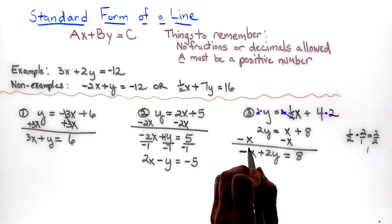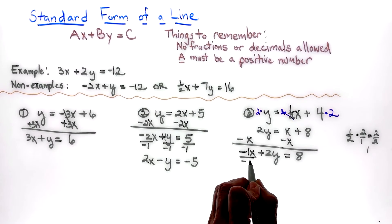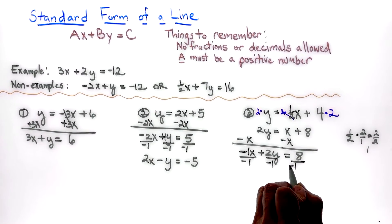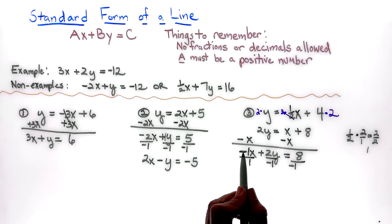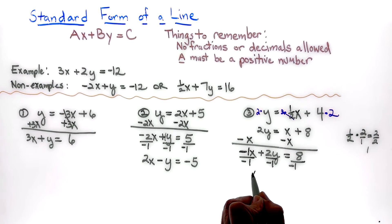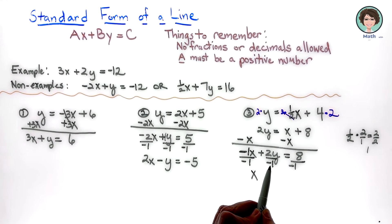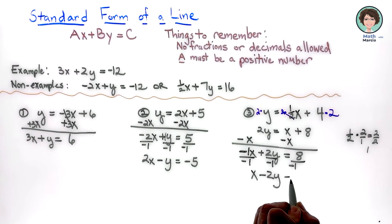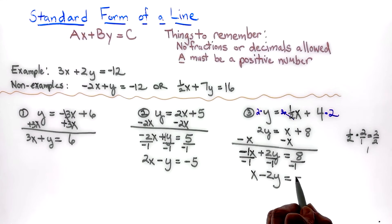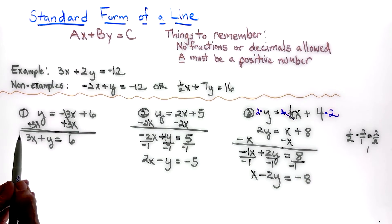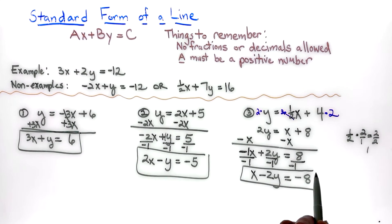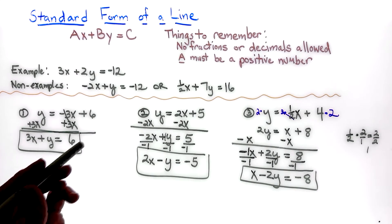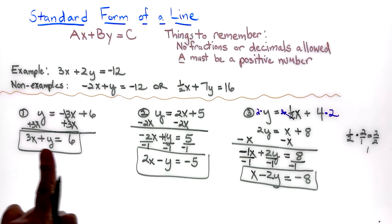That's like a negative 1, so I divide everything by negative 1 because A must be positive. Negative 1 divided by negative 1 is positive 1, so I just write x. Then 2 divided by negative 1 is negative 2, giving minus 2y, and 8 divided by negative 1 is negative 8. All equations are now written in standard form — no decimals, no fractions, and the beginning number is definitely positive.